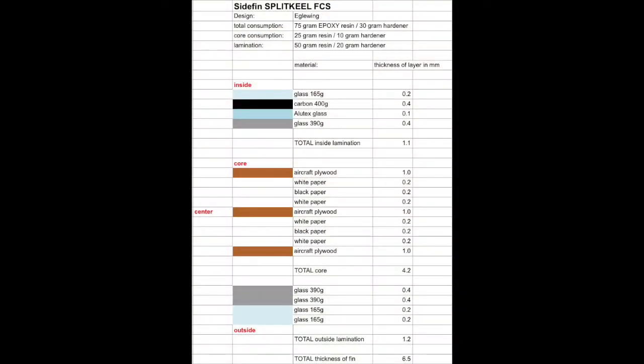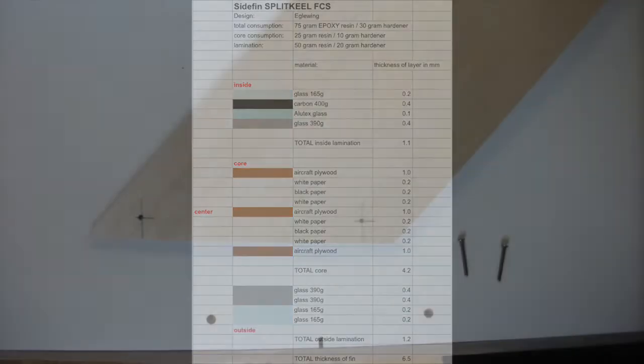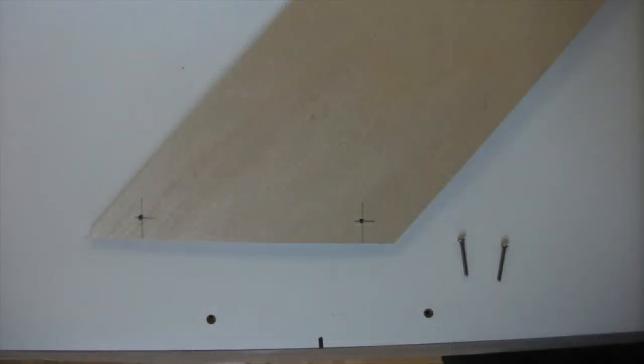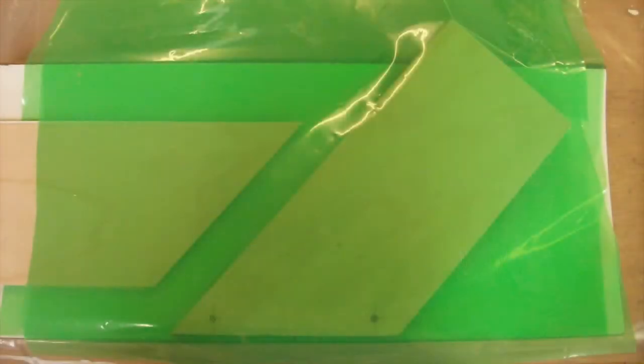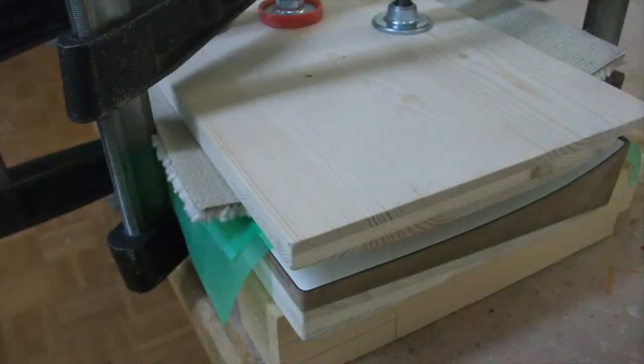As shown in my previous videos, I calculate the thickness of the layers of the fin. Then I prepare all the layers for the fin core. I drill some positioning holes through the layers and into the mold and I glue it all together.